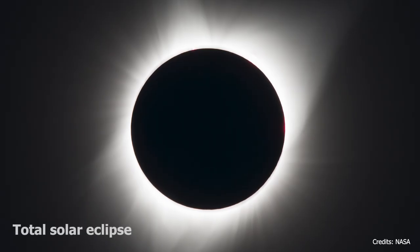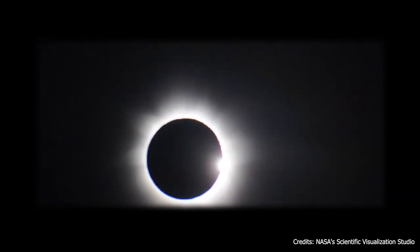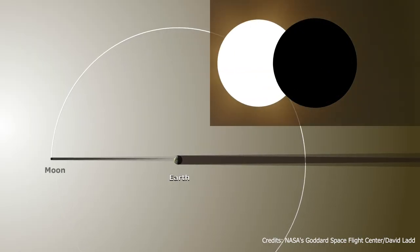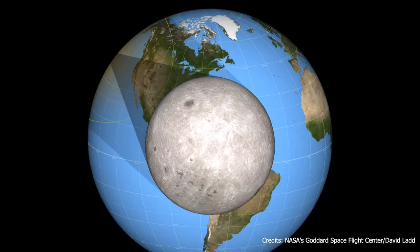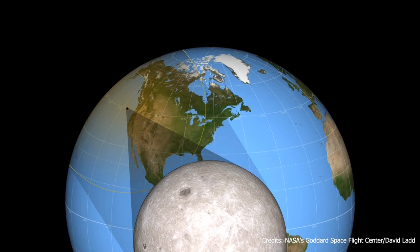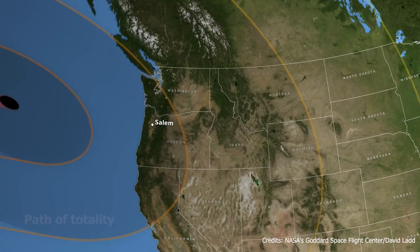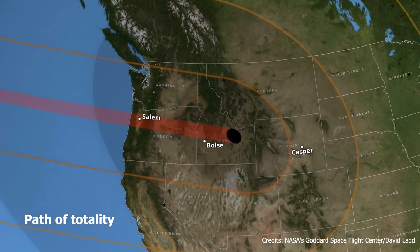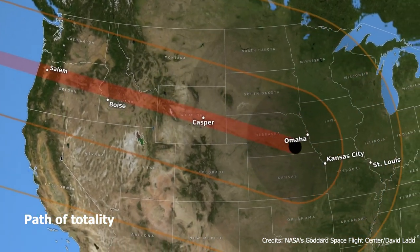A total solar eclipse is the most spectacular one. It occurs when the Moon completely covers the Sun's disk. You can see a total solar eclipse only if you're standing within the umbral shadow of the Moon. As the umbra moves across the Earth, it creates a trail called the Path of Totality. If your area is located within the Path of Totality, you'll be able to experience a total solar eclipse.